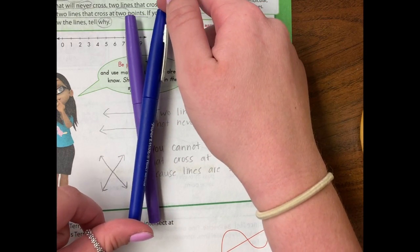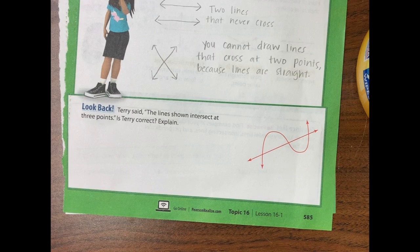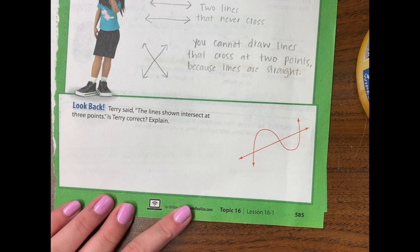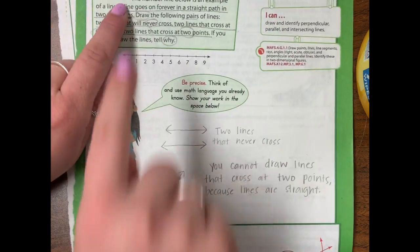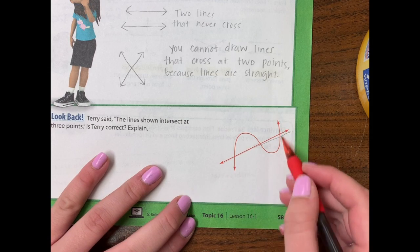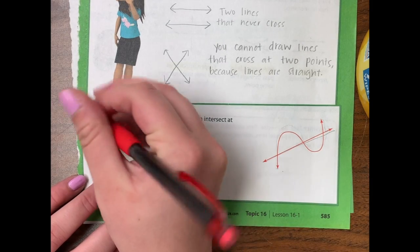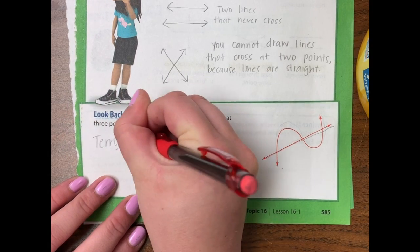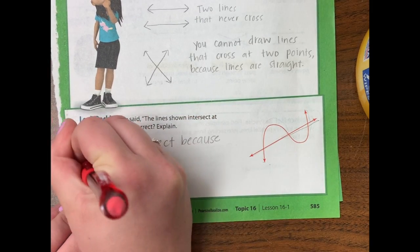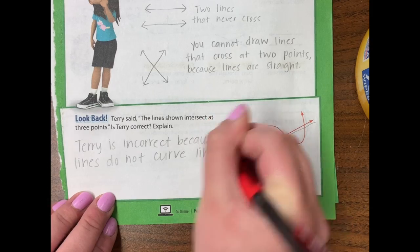Right there in the middle. I can't get it to cross. They're not on top of each other, they just have to cross. Jerry is incorrect because lines do not curve like the one shown.